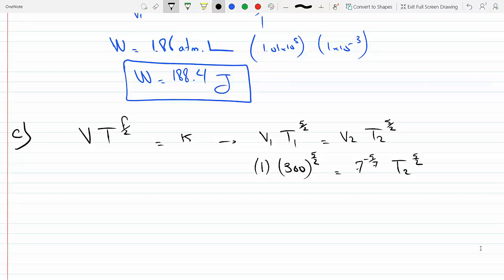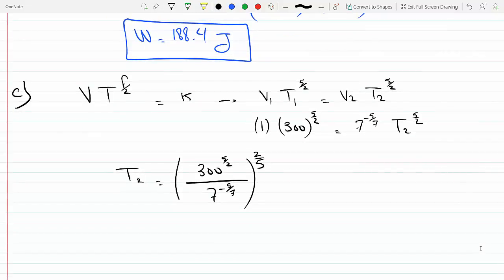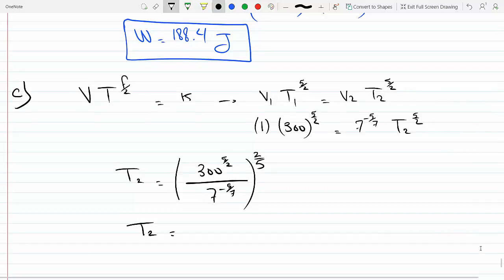We could just divide and raise everything to the 2/5, so we get 300 to the 5/2 over 7 to the minus 5 over 7, and this whole thing raised to the 2/5. If you plug this on the calculator, you're supposed to get 523 kelvin.